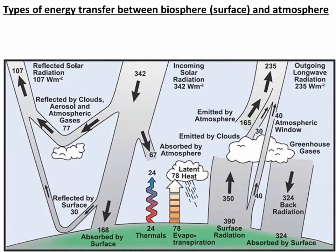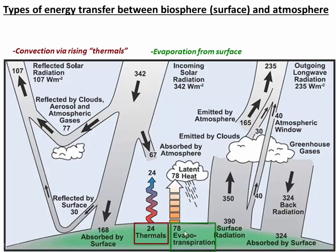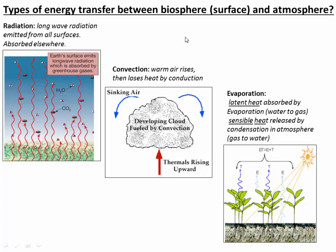Let's look more closely at the ways that Earth's surface can send energy up to the atmosphere. There are three main ways: one is convection, which we're going to call thermals; another is evaporation; and another is radiation, which we've already talked about. Radiation is the concept that warm objects like Earth's surface send off long-wavelength radiation in the form of photons up into the atmosphere.